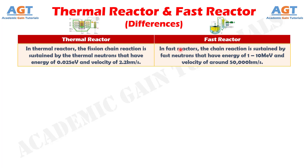Whereas, in fast reactors, the chain reaction is sustained by fast neutrons that have energy of 1 to 10 megaelectron volt and velocity of around 50,000 kilometers per second.